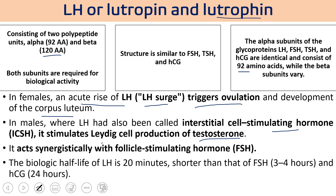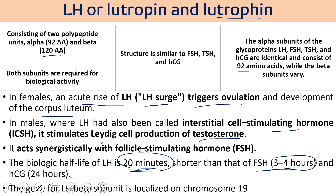The biological half-life of LH is 20 minutes, which is shorter than FSH with a half-life of 3 to 4 hours, and HCG which is roughly 24 hours. The gene for the alpha subunit of LH is on chromosome number 6, and the gene for the beta chain of LH is on chromosome number 19 — different from FSH's beta chain gene which is on chromosome 11.